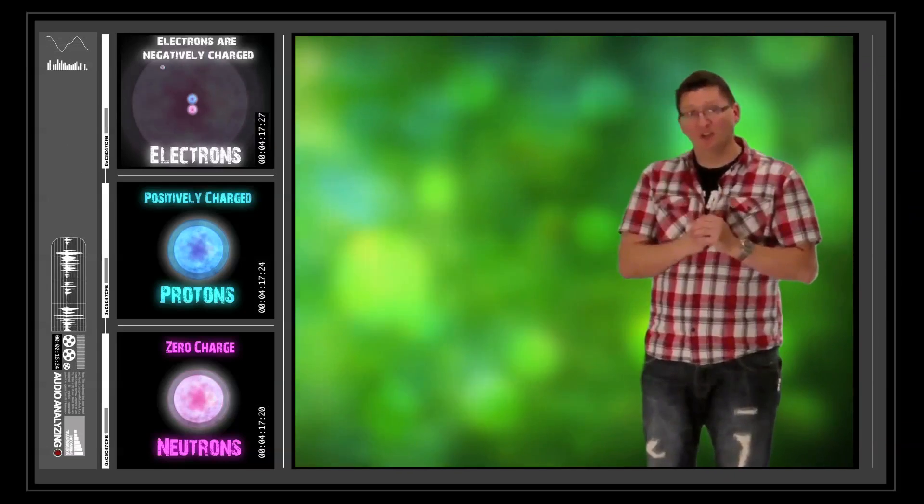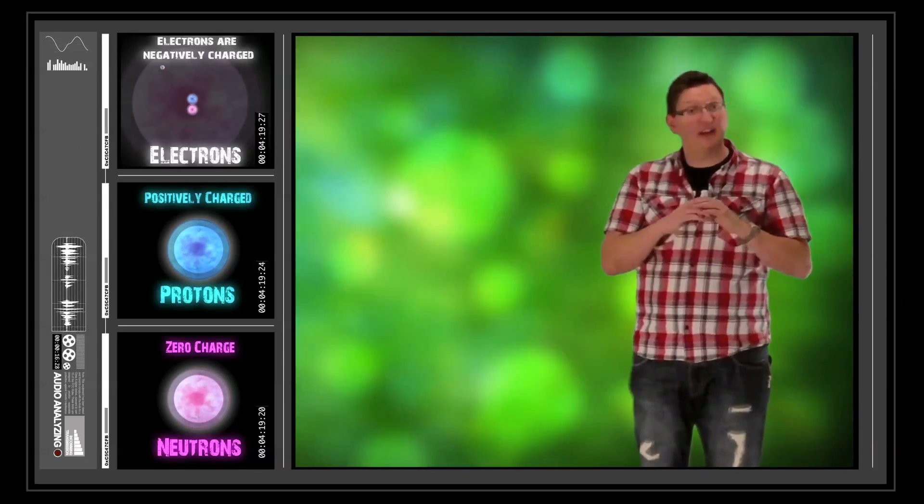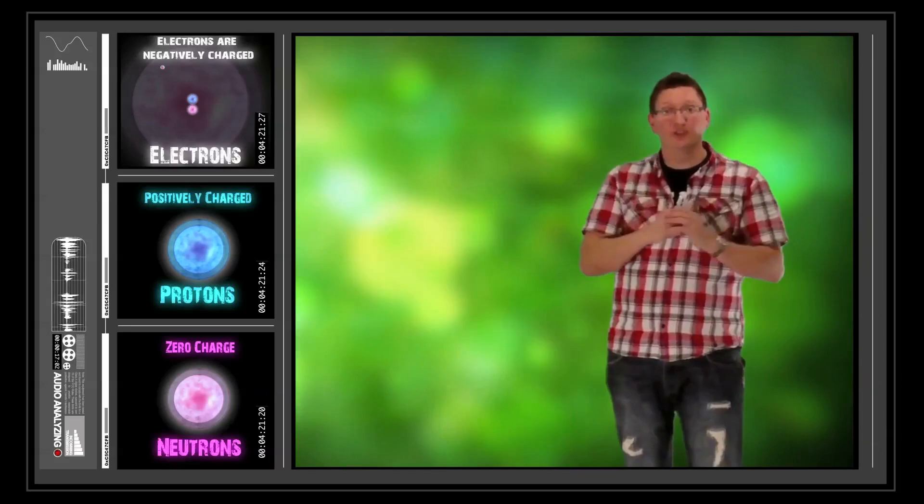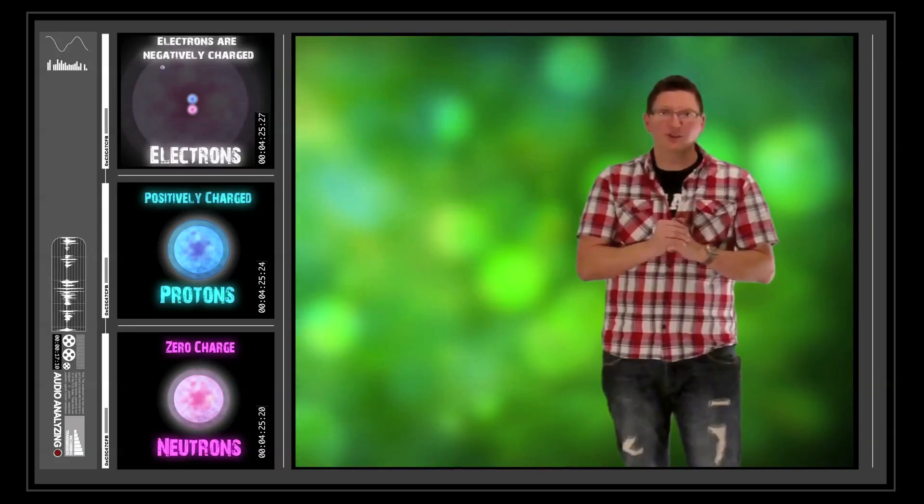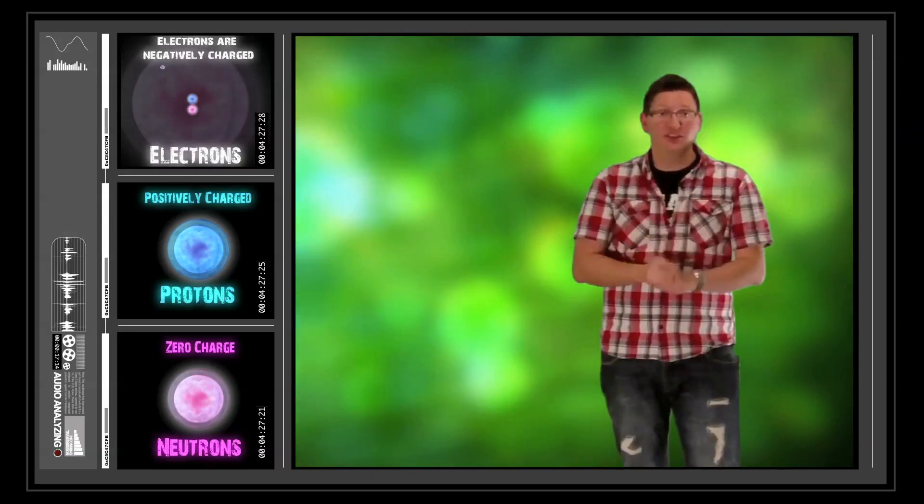Sometimes you can have slightly varying numbers, so you can have non-whole numbers, you can have like fractional numbers. And we'll come on to that when we look at isotopes and abundance of the elements.